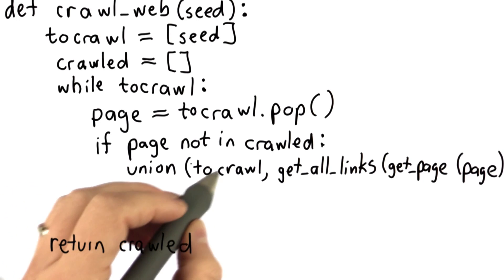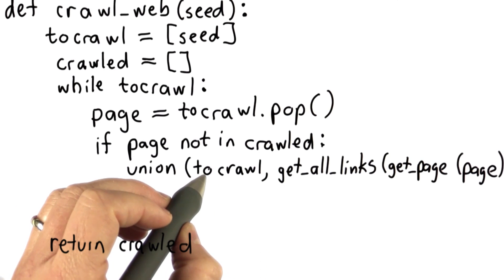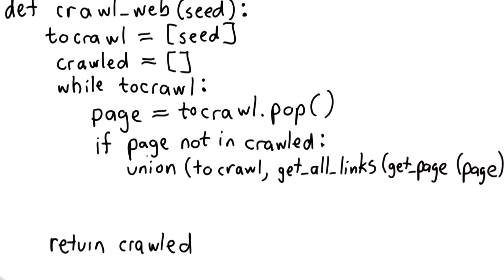So the first thing we'll do is add all the links that we find on the page that we're crawling, that's the value of page, to tocrawl.